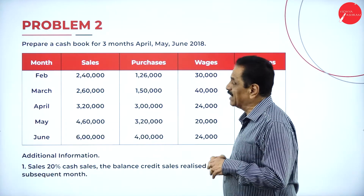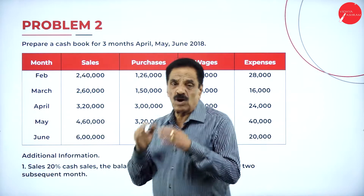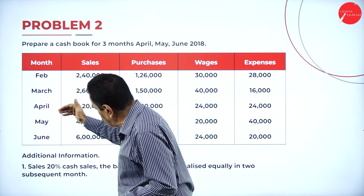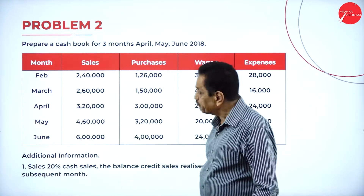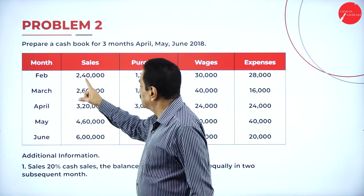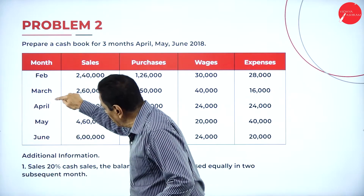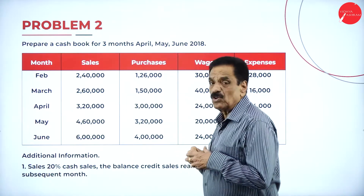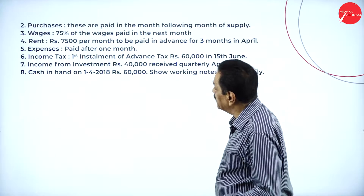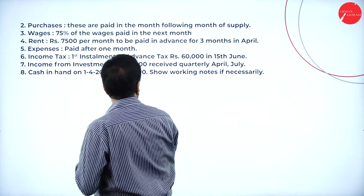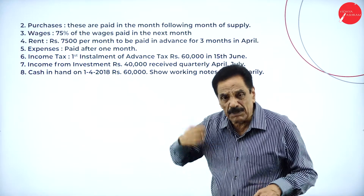20% is the cash sale received in the same month; the balance is credit sale collected equally in two subsequent months — half in the first subsequent month, half in the second. So February sale: half in March, half in April. March sale: half in April, half in May. Purchases are paid in the month following the month of purchase — if purchased this month, payment is made next month.